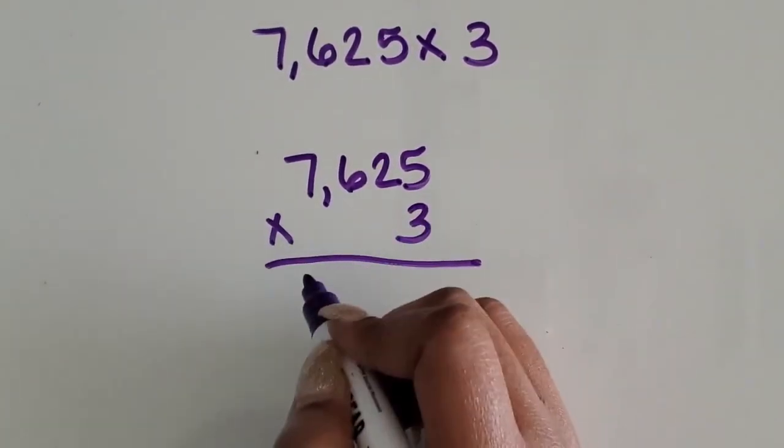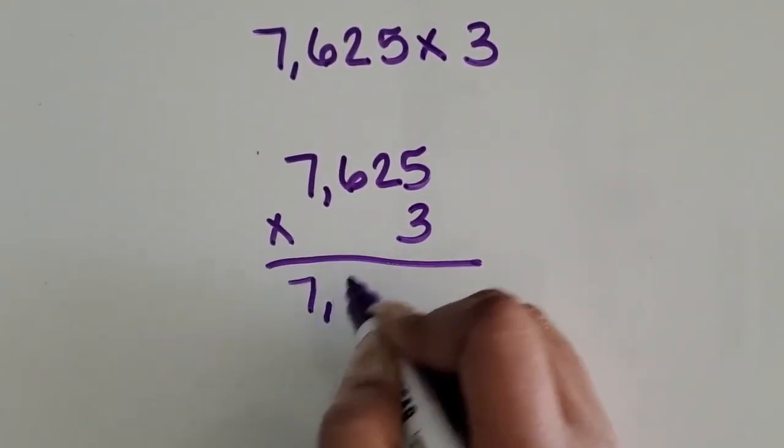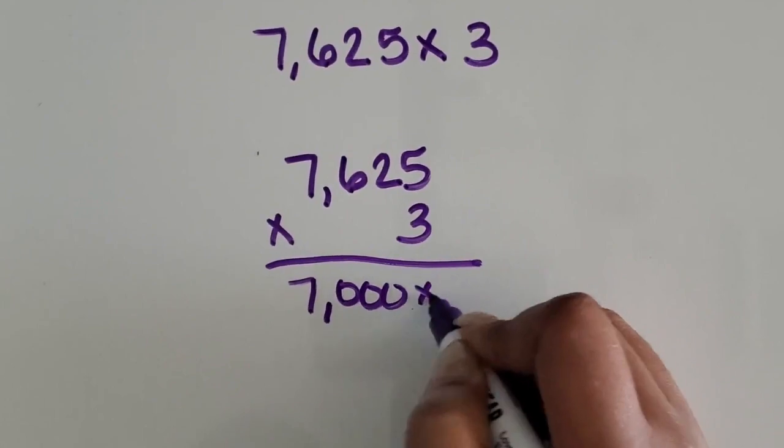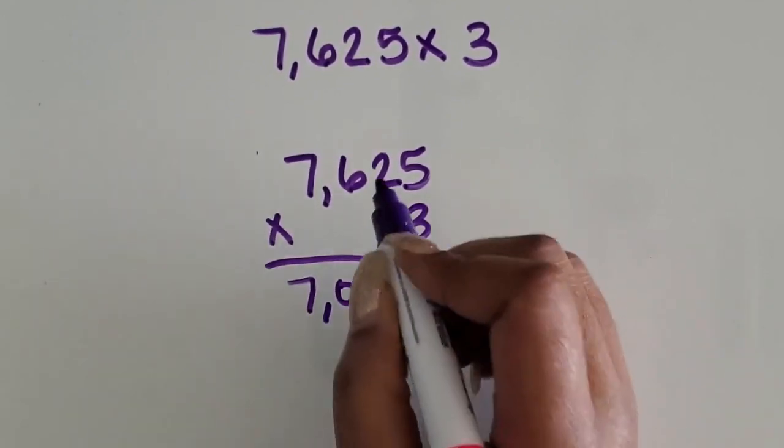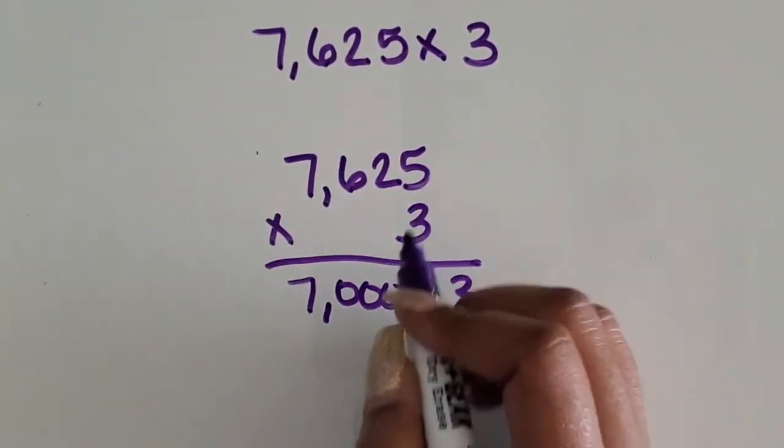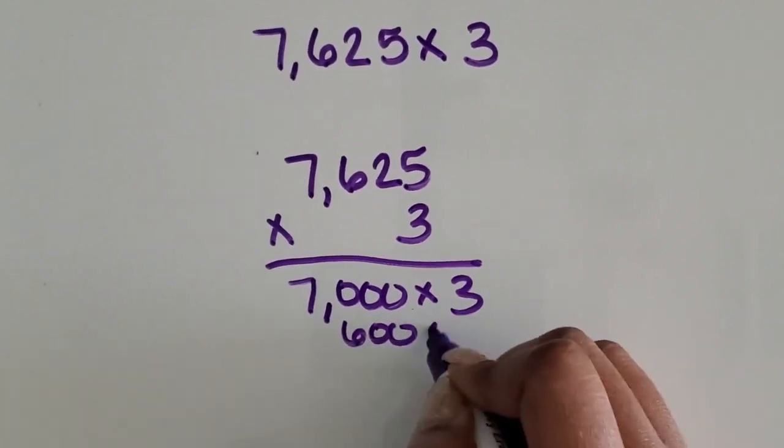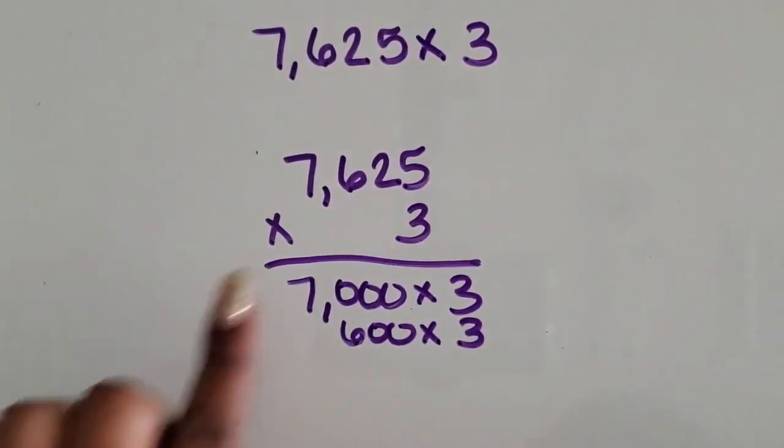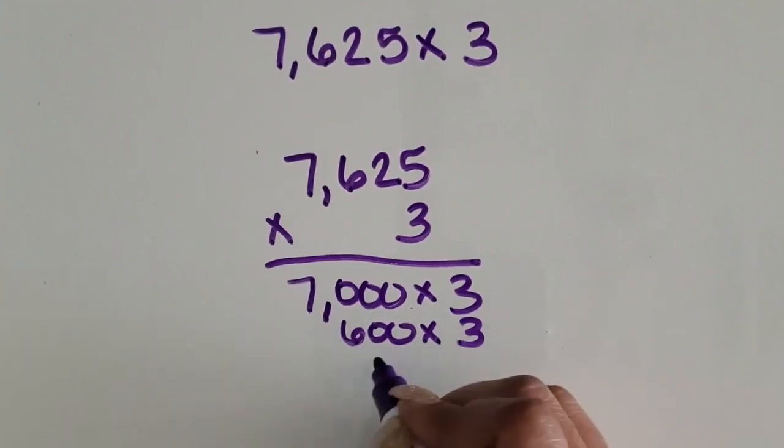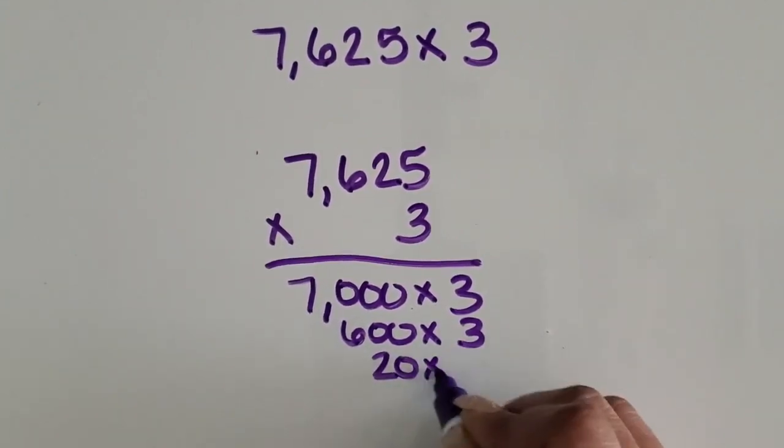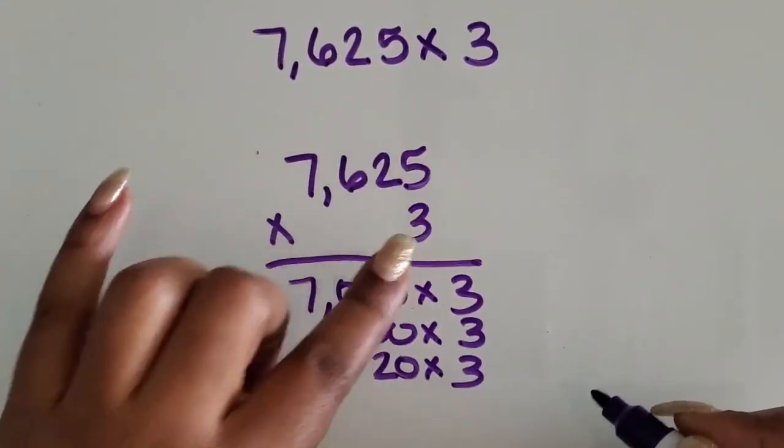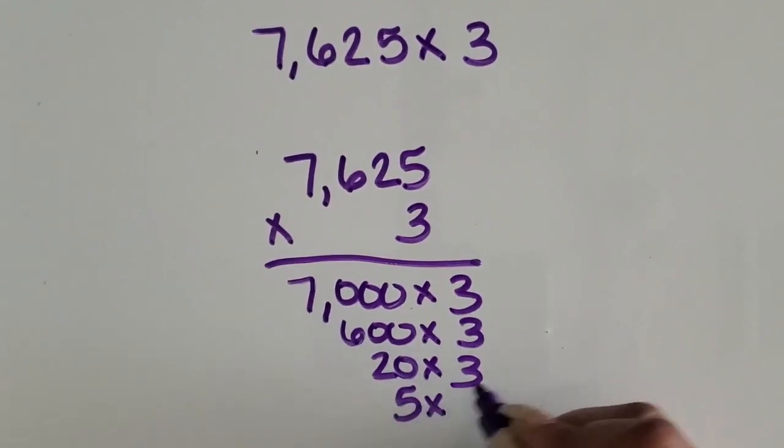Seven is in the thousands place, so we know 7,000, we're going to multiply that by three. Six is in the hundreds place, so we're going to multiply 600 times three. Two is in the tens place, so it's 20 times three. And then five in the ones place, five times three.